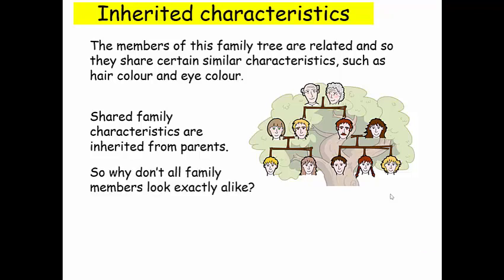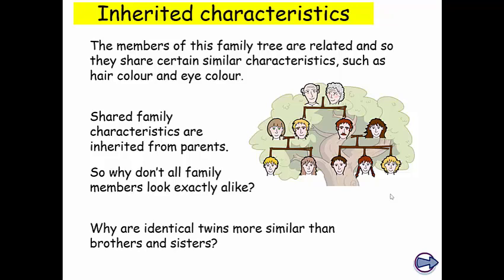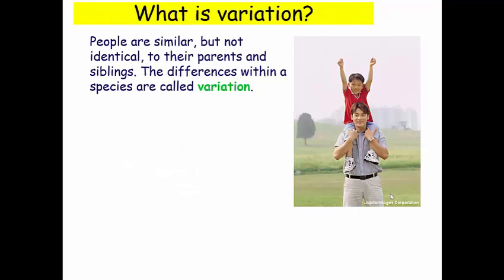So why don't all family members look exactly alike? Why are identical twins more similar than brothers and sisters? Well that's due to the fact that variation can be environmental as well as inherited.